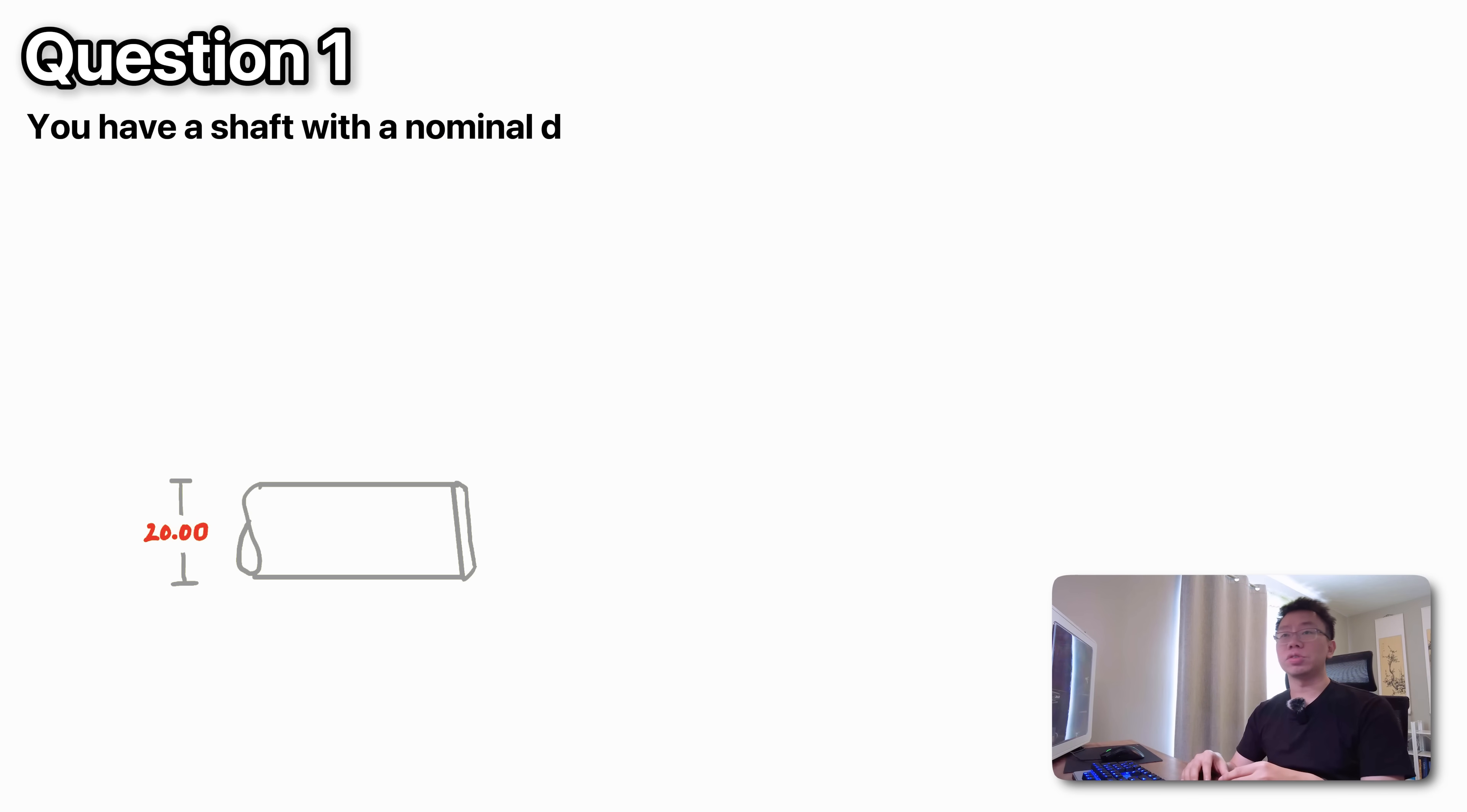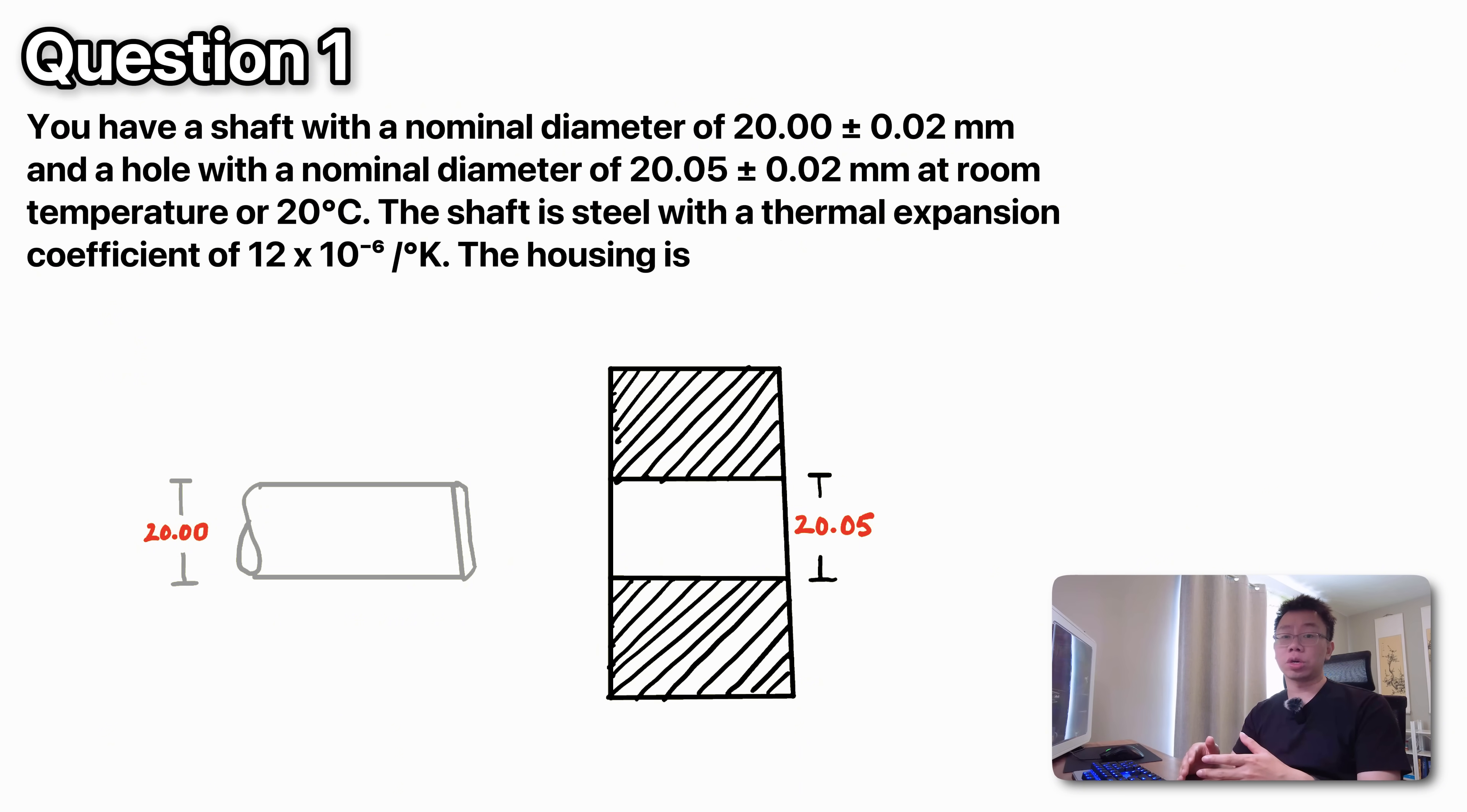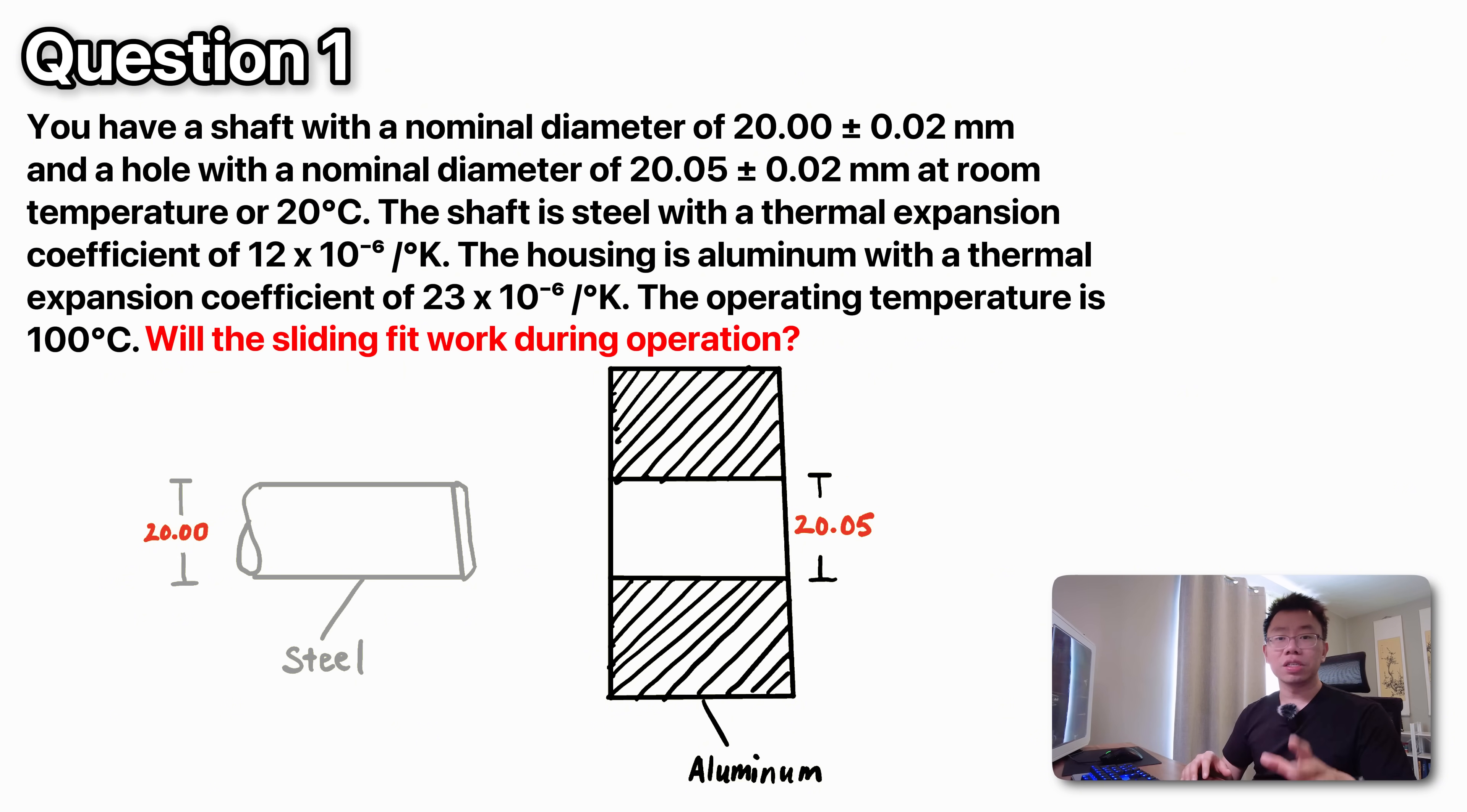You have a shaft with a nominal diameter of 20 millimeters plus minus two hundredths of a millimeter and a hole with a nominal diameter of 20.05 millimeters plus minus two hundredths of a millimeter at room temperature or 20 degrees Celsius. The shaft is steel with a thermal expansion coefficient of 12 times 10 to the minus 6 per Kelvin. The housing is aluminum with a thermal expansion coefficient of 23 times 10 to the minus 6 per Kelvin. The operating temperature is 100 degrees Celsius. The question is, will the sliding fit still work during operation? Pause the video, take 30 to 60 seconds to think about it, which is how much time you would typically have in an interview.